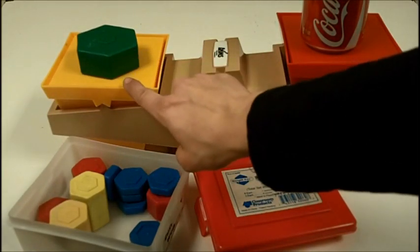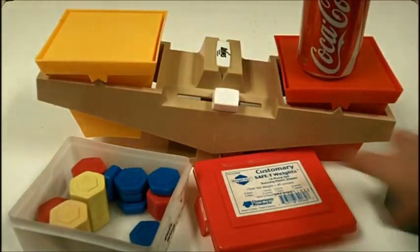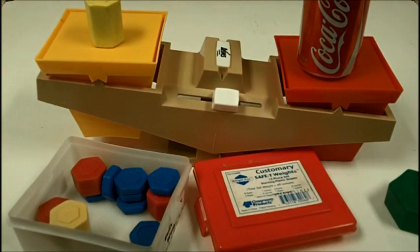And I'm going to first use my heaviest one that makes sense, and see if this pound is more or less than the amount of the Coke. Well, since it goes down, this Coke can weighs less than a pound. So now I'm going to go with the half a pound, which is the eight ounce one, and place that on there, and it doesn't make it go down.